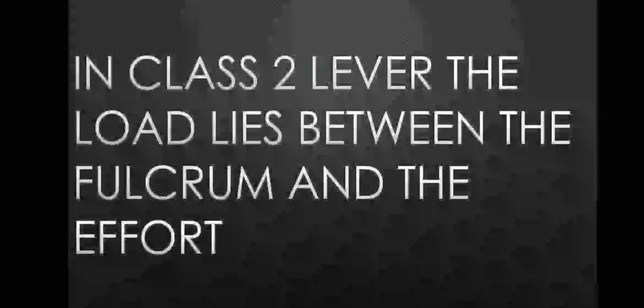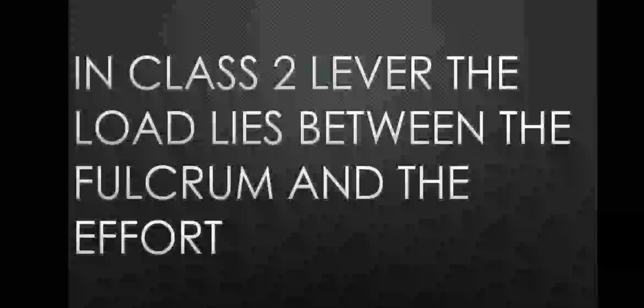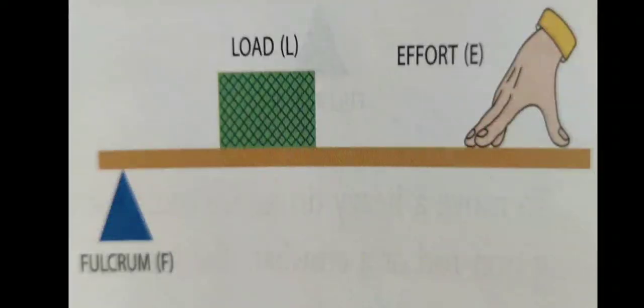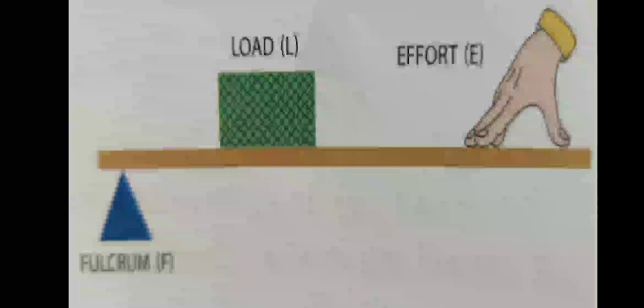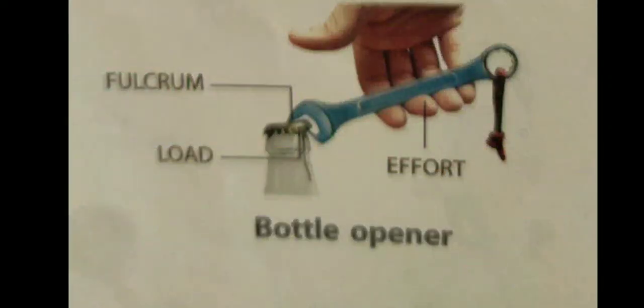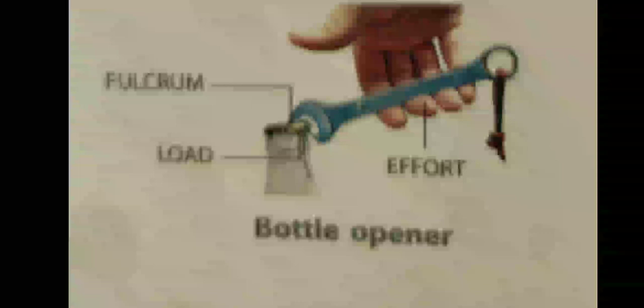Class 2 lever or second class lever. In Class 2 lever, the load lies between the fulcrum and the effort. You can see here in this picture that load is lying between the effort and fulcrum. Bottle opener is an example of Class 2 lever, as the load—that is the cap of the bottle—lies between the fulcrum and the effort.